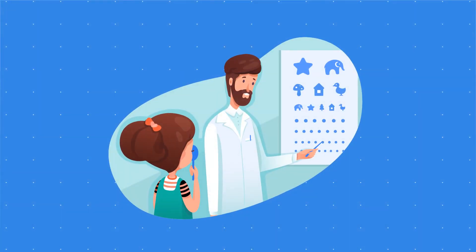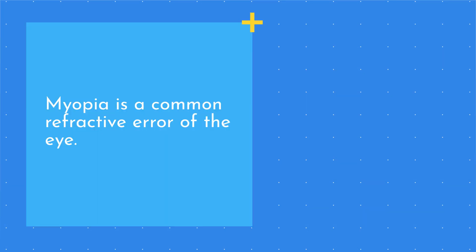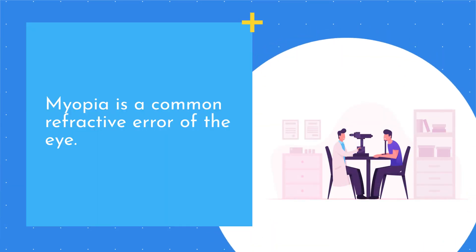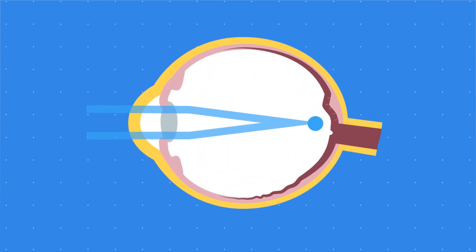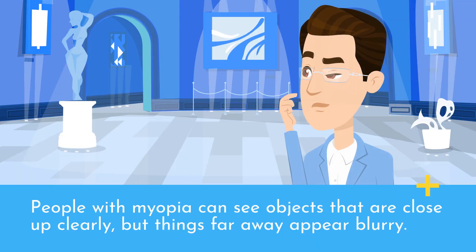So what is myopia? Myopia is a common refractive error of the eye. Light rays entering the eye are focused in front of the retina instead of on the retina. People with myopia can see objects that are close up clearly, but things far away appear blurry.